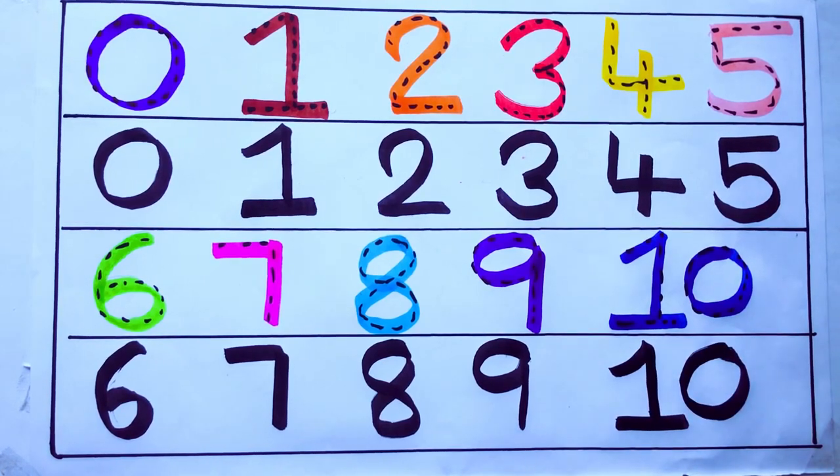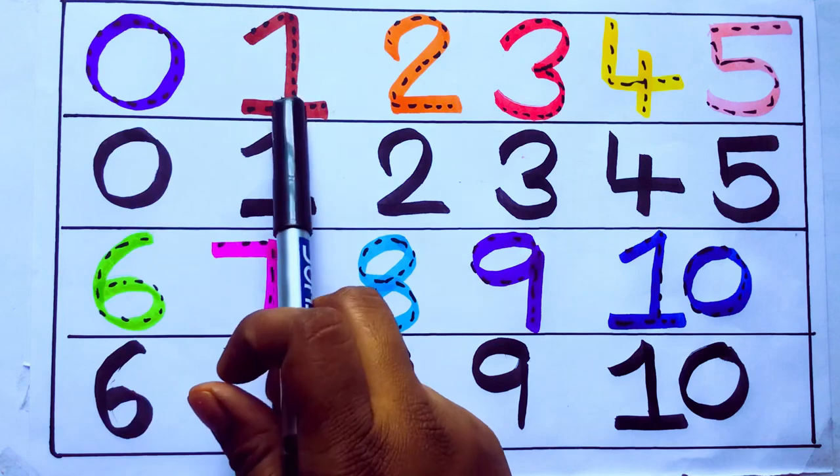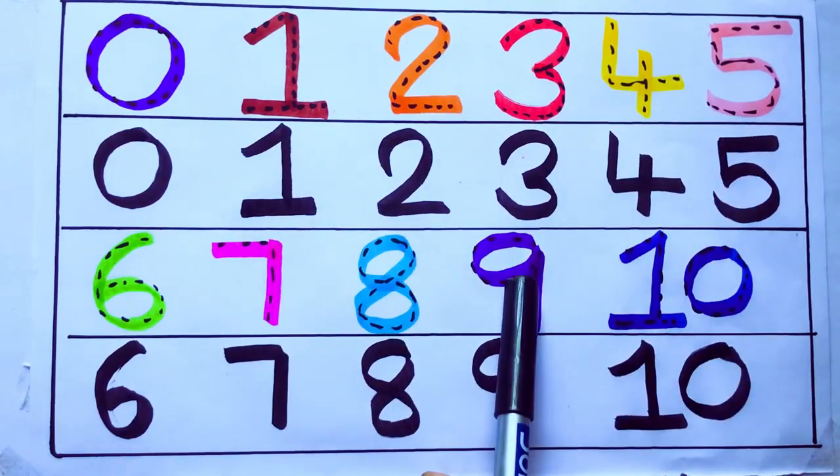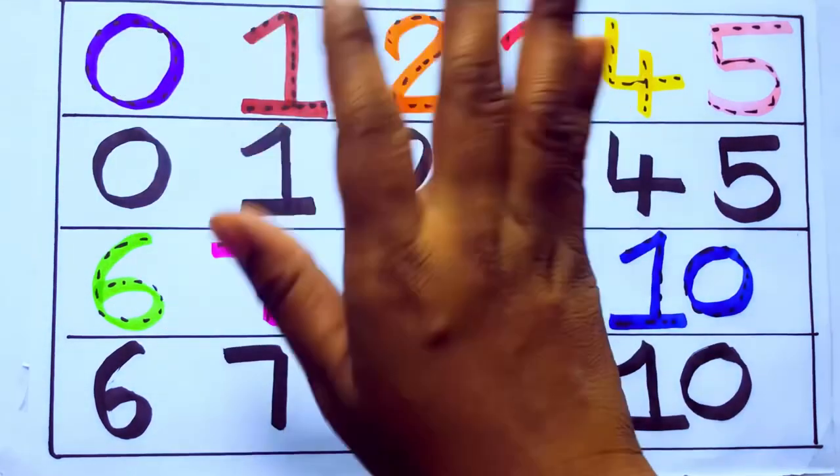Now let's review the numbers. 0, 1, 2, 3, 4, 5, 6, 7, 8, 9, 10. Okay. Bye kids.